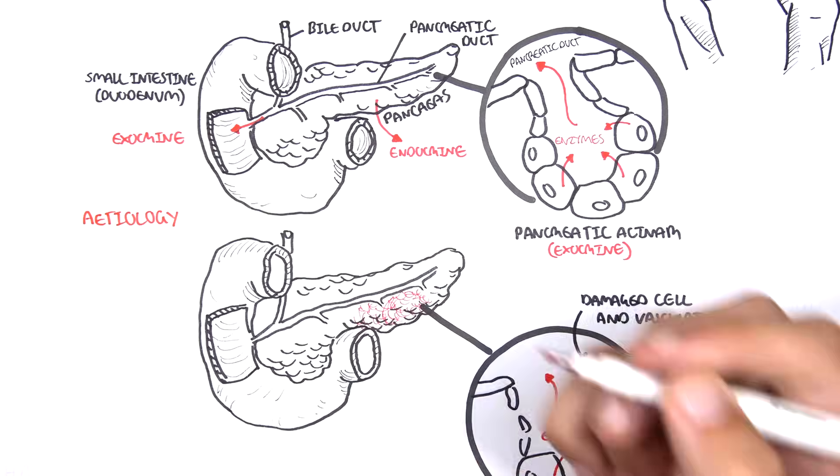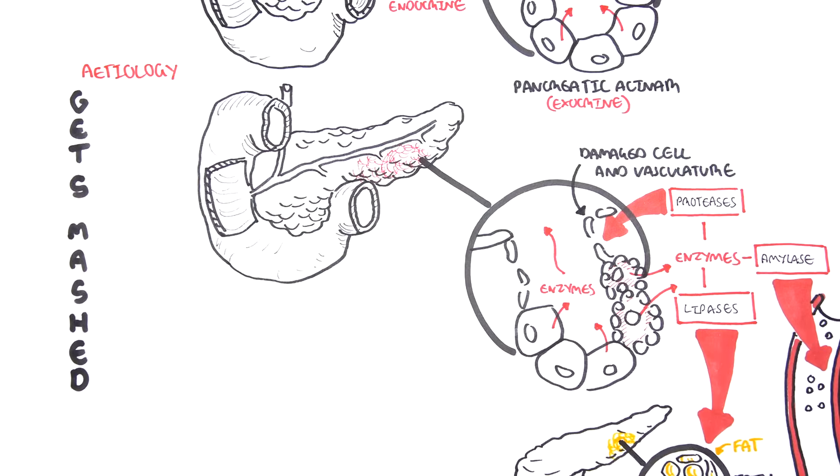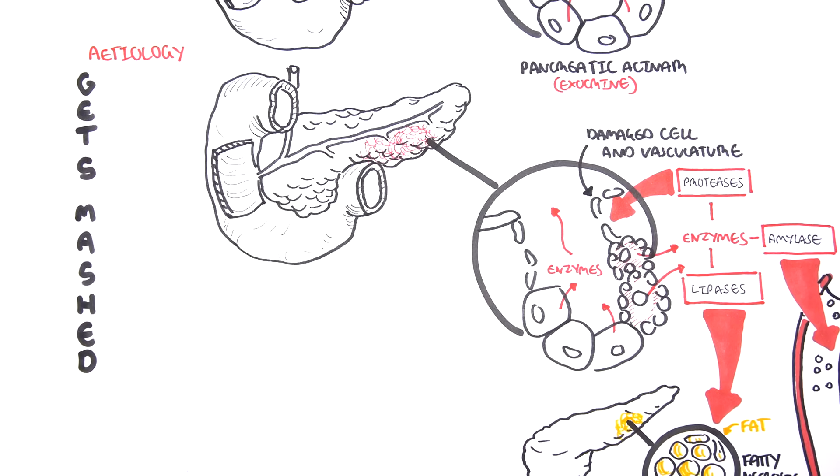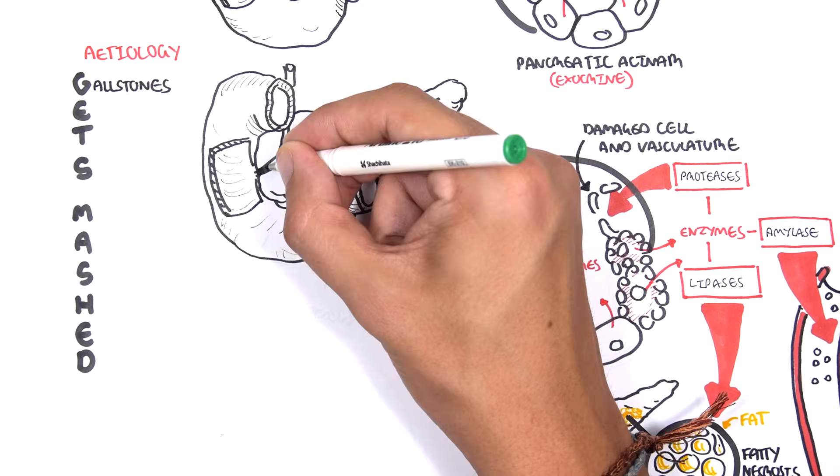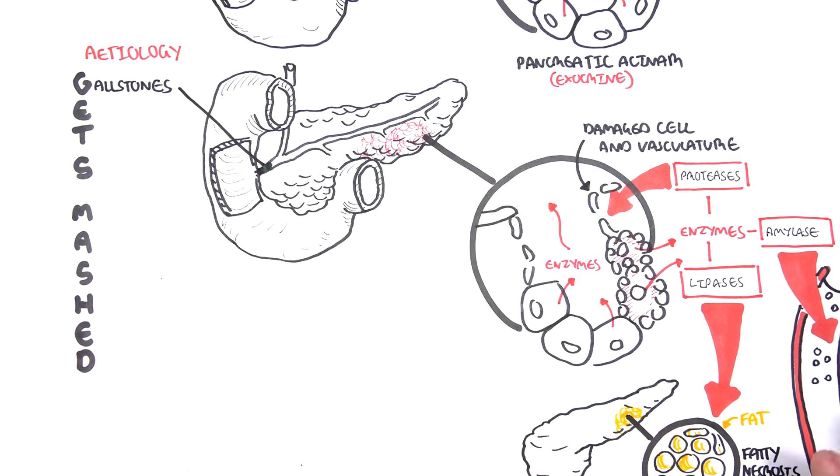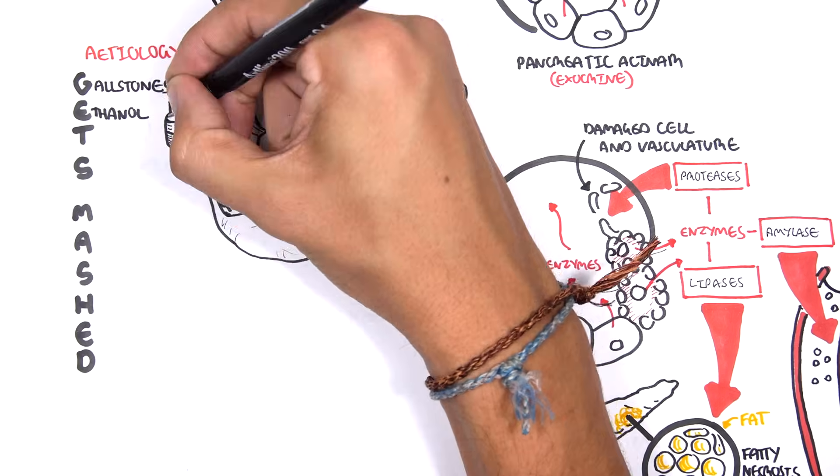The etiology of acute pancreatitis, the cause of pancreatic inflammation mediated by enzyme autodigestion, can be remembered by a useful acronym, GET SMASHED. G stands for gallstones, which can plug at the ampulla of Vater, resulting in backflow of bile and pancreatic juices into the pancreas. E is for ethanol.